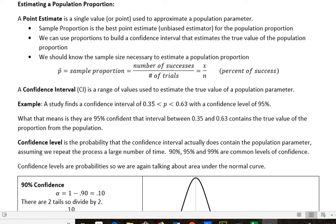We use a sample proportion as the best point estimate for a population proportion because, as we saw earlier, proportions are unbiased estimators. We can use proportions to build a confidence interval that estimates the true value of the population proportion.